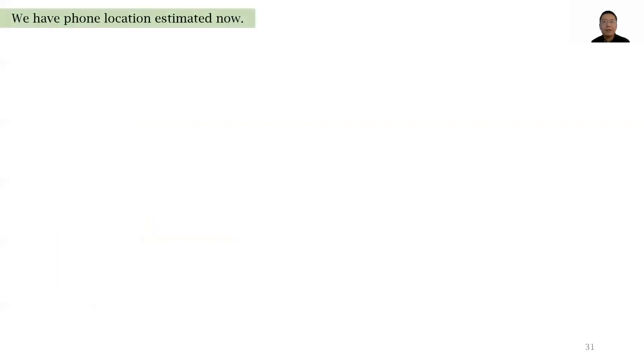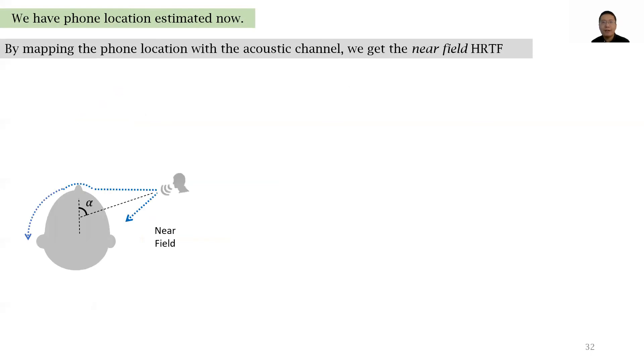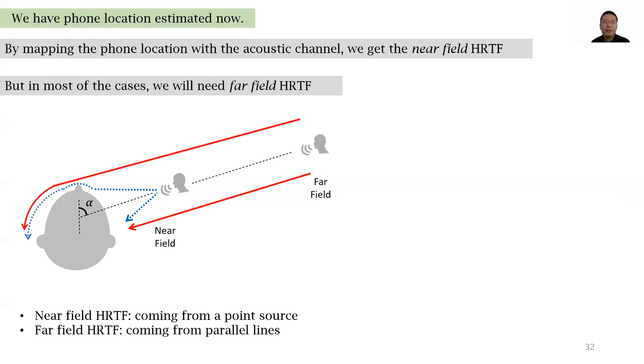And we now have the phone location estimated. By mapping the phone location with acoustic channel, we get the near-field HRTF. We can see that the near-field HRTF is actually coming from a point source. But in most cases, we will need far-field HRTF. Far-field HRTF is coming from parallel lines. And so next, I will talk about our next module, which is near-field HRTF conversion.